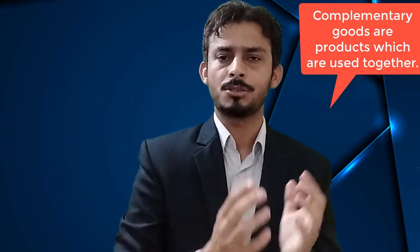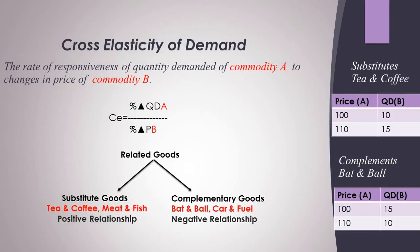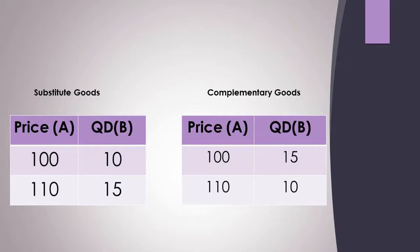The relationship in complementary goods is negative. Complementary goods are goods where one good is essential for the other. Examples include car and petrol, and bed and ball. If oil prices increase, people try to consume or buy less of the car, so quantity demanded decreases. This shows the inverse relationship between complementary goods.